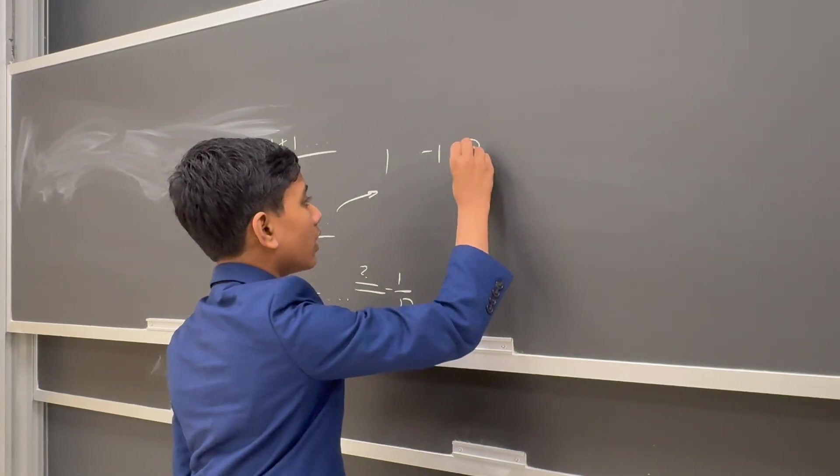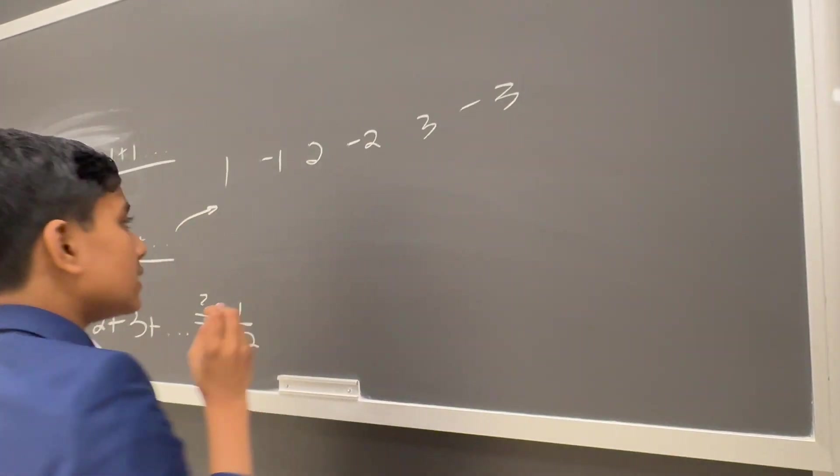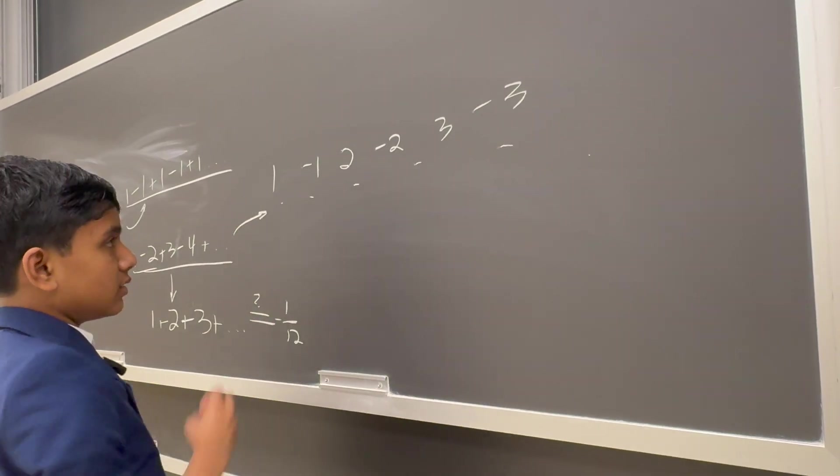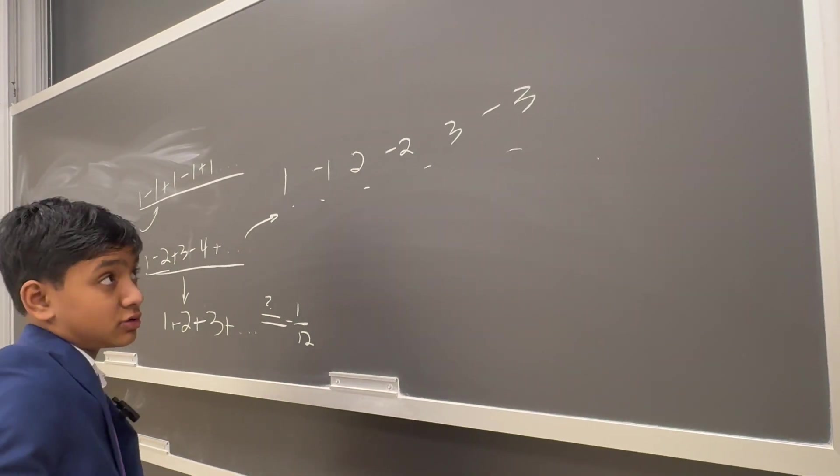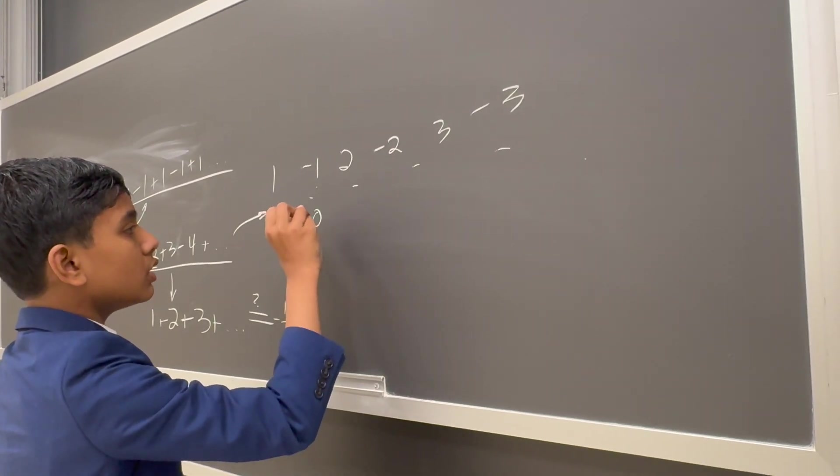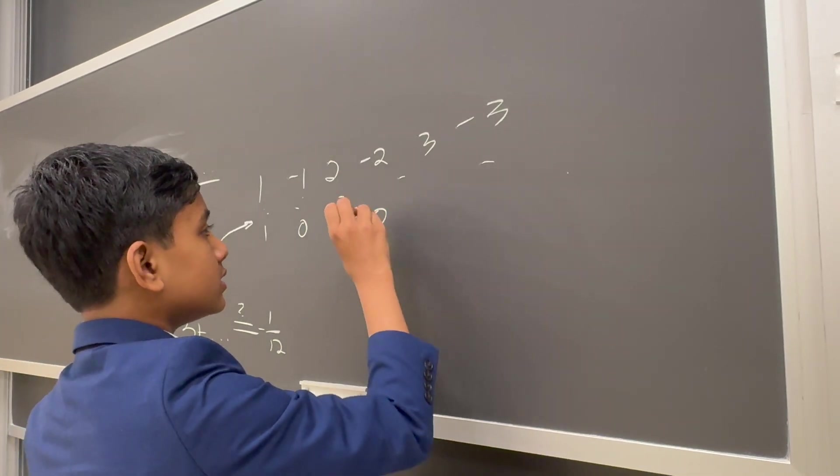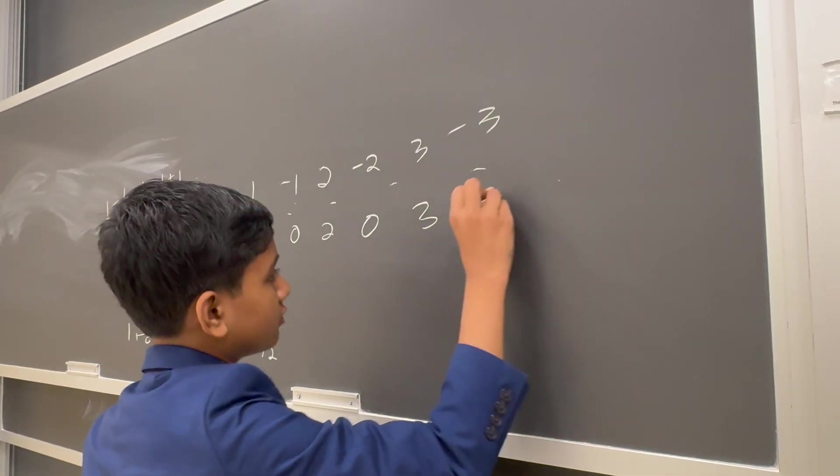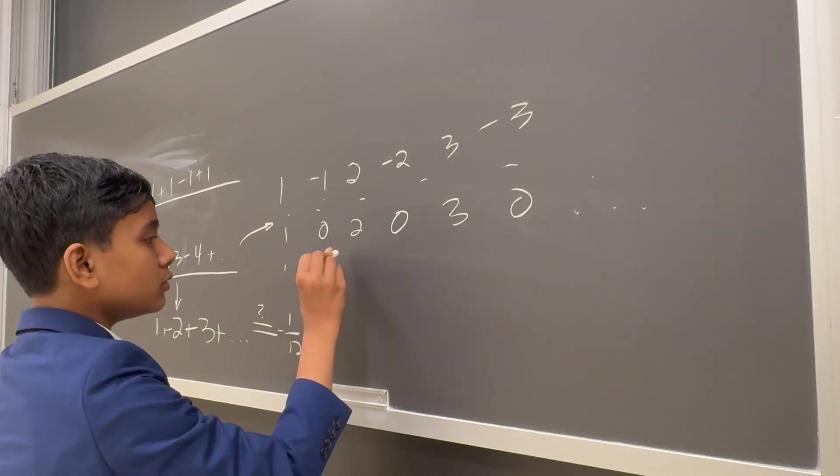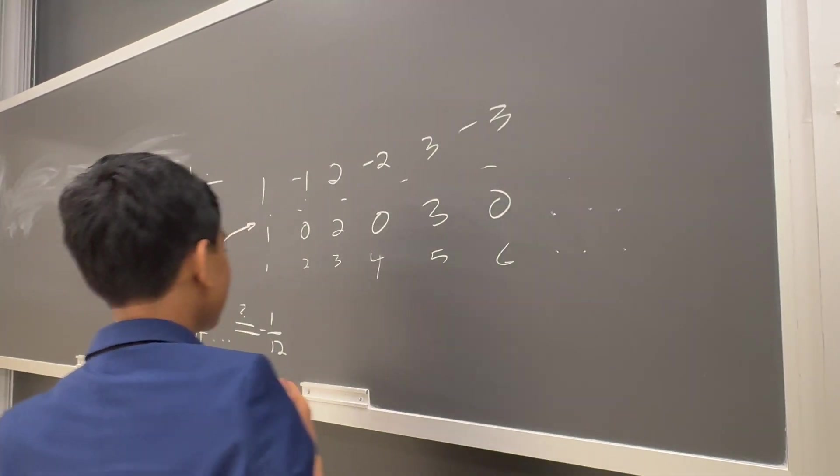So the partial sums itself are 1, minus 1, 2, minus 2, 3, minus 3, etc. Then the sums of them, as we go on, the partial sums of the partial sums, are going to be 1, 0, 2, 0, 3, 0, and so on. Now we divide this by 1, this by 2, this by 3, this by 4, this by 5, this by 6, etc. to get the means.